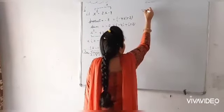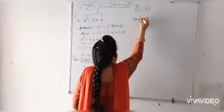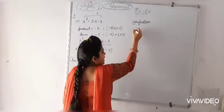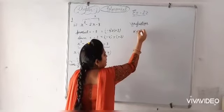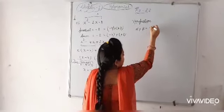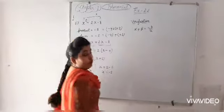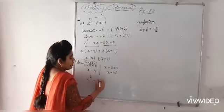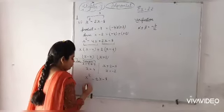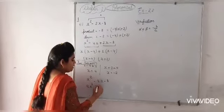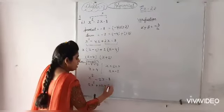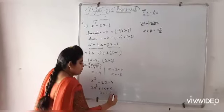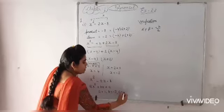Now verification. Alpha plus beta is equal to minus b by a. Now from where this b and a will come? After comparing this equation x square minus 2x minus 8 with standard equation ax square plus bx plus c, we will get values of a. In this case a is equal to 1, b is equal to minus 2, c is equal to minus 8.